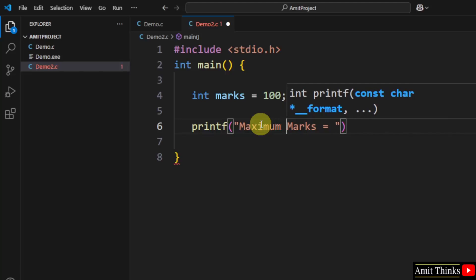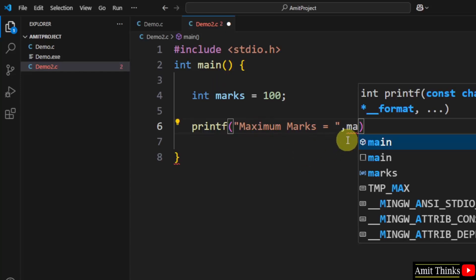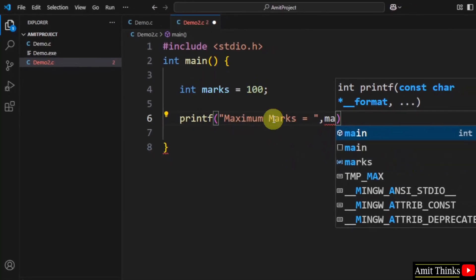And after that, comma and mention the same variable. When I typed 'ma', it is showing us the marks here. Also mention a semicolon and return 0. This won't print anything. I will show you why. Go to file, click save. Now right-click and run code.